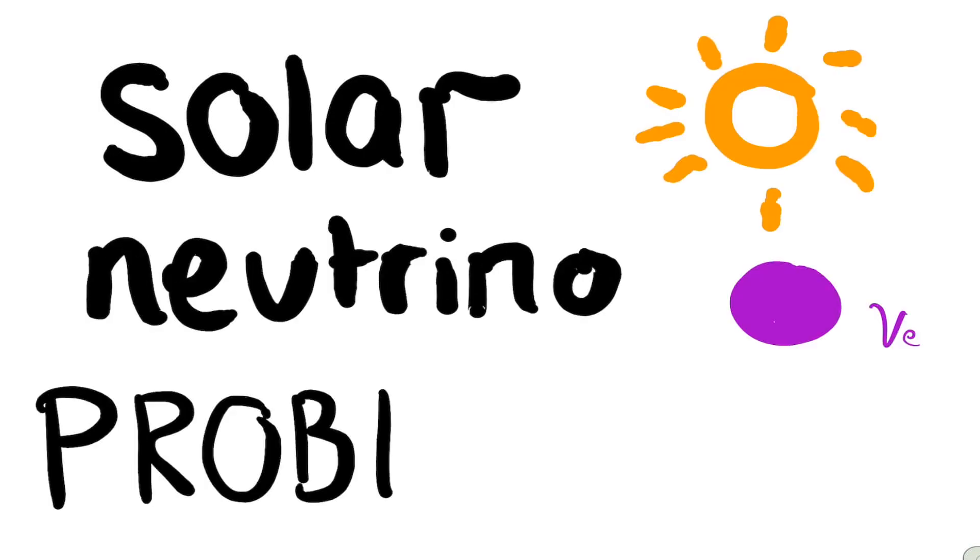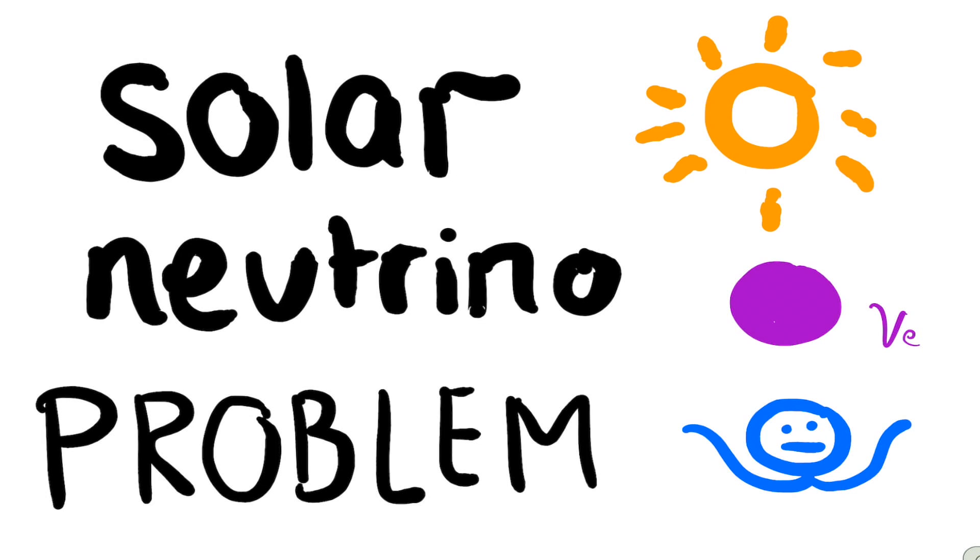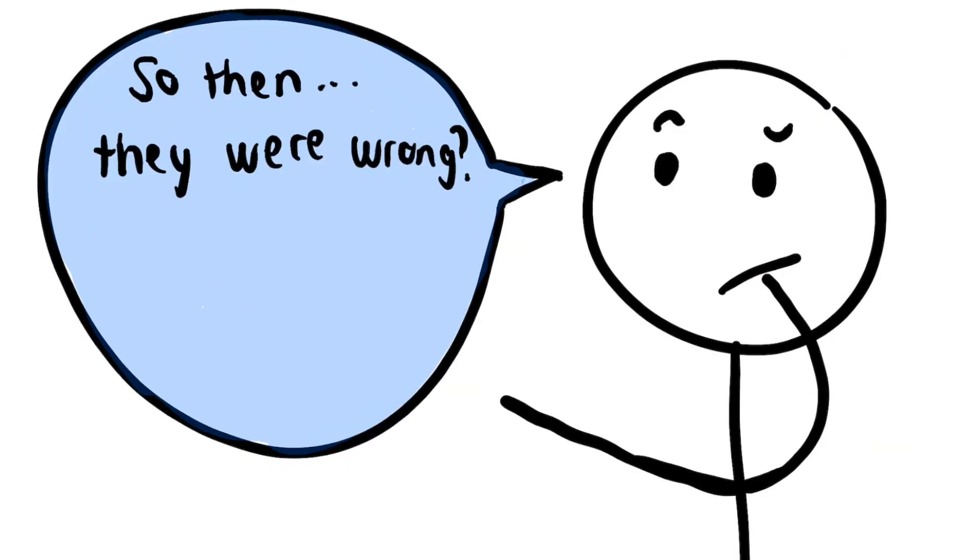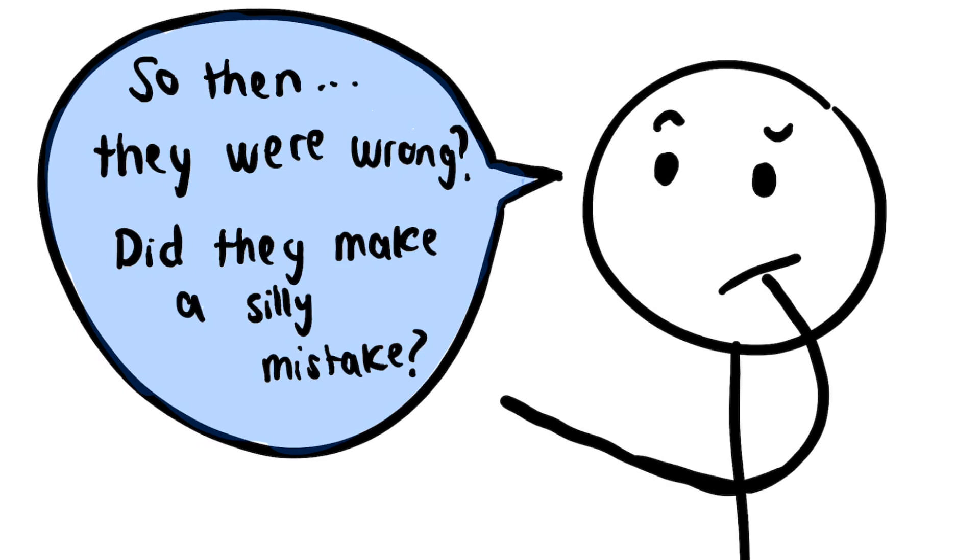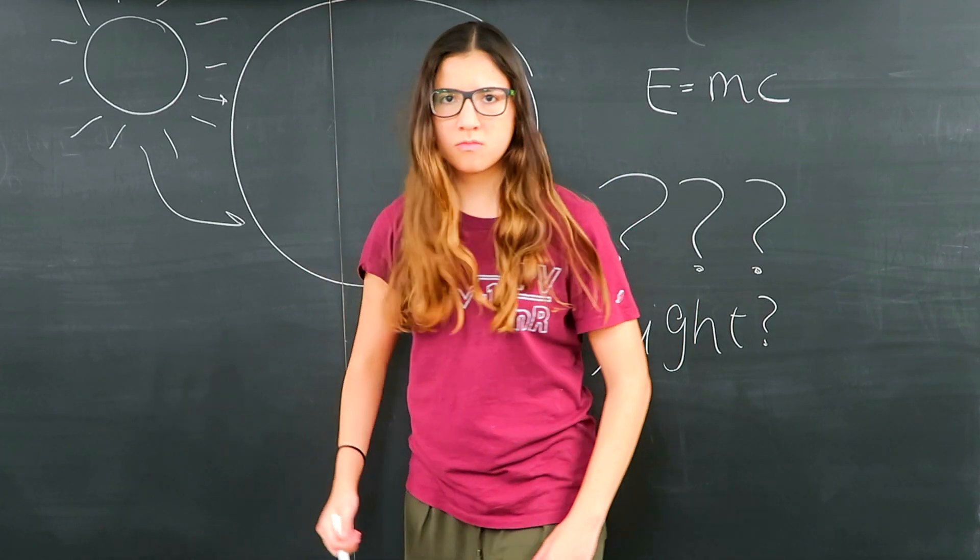And this, ladies and gentlemen, is how the solar neutrino problem was born. So, this should mean that the sun does not shine by converting, deep in its interior, hydrogen into helium, right? Because electrons cannot just simply disappear, right? Wrong!